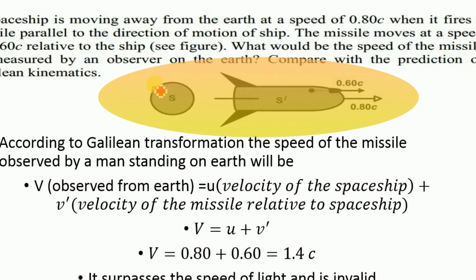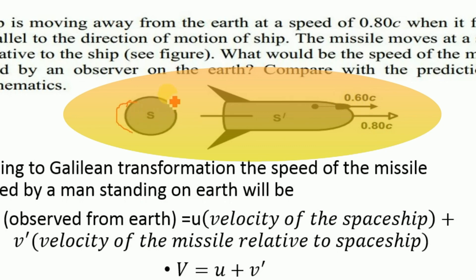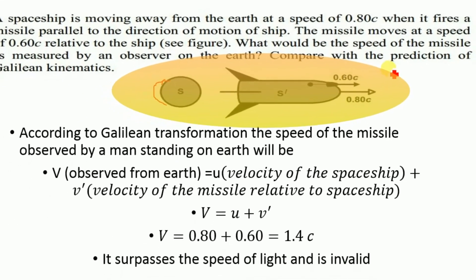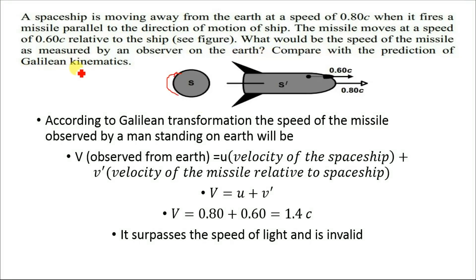Let's suppose this is Earth and this spaceship is moving away from the Earth with a velocity of 0.80c. It fires a missile with a speed of 0.60c. We will measure the velocity of the missile with respect to a stationary frame of reference — Earth — using both Galilean kinematics and Lorentz transformation.